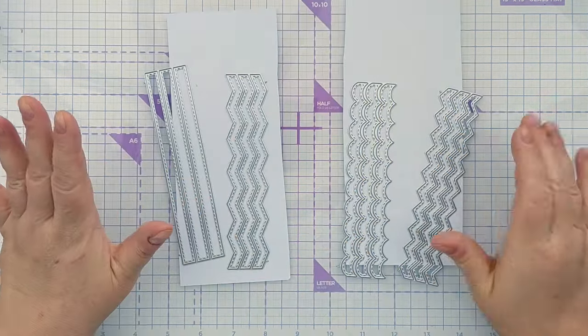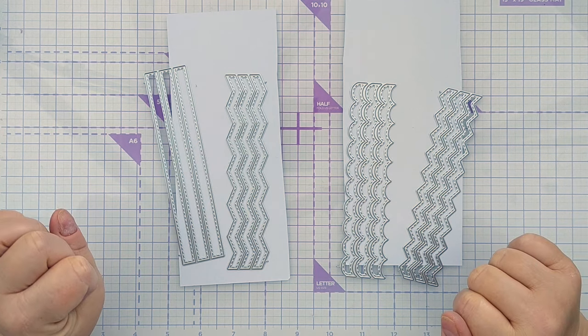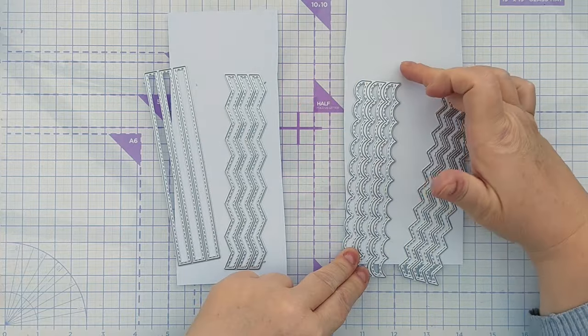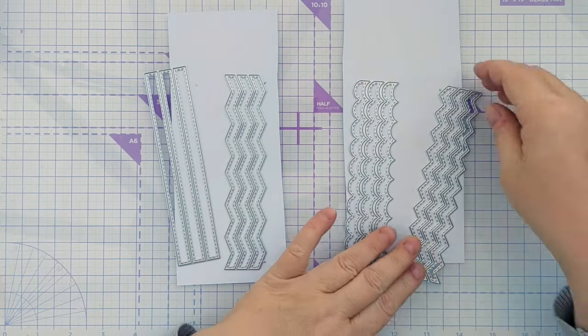To get going I'm going to cut some strips out of smooth white card. I've got straight stitched strips, some wide rickrack, some scalloped and some narrow rickrack.